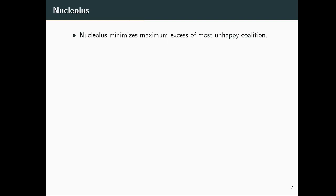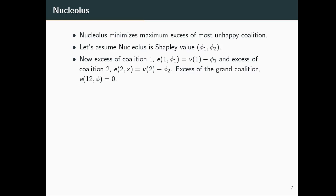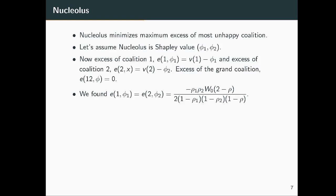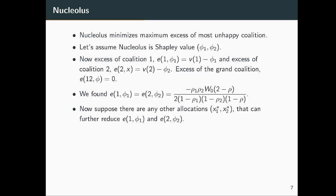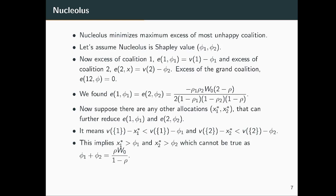The nucleolus is another solution concept in cooperative game theory that minimizes the maximum excess of the most unhappy coalition. We claim the nucleolus equals the Shapley value. The excess for coalition 1 is v(1) - phi_1 and for coalition 2 is v(2) - phi_2; for the grand coalition it is 0 since phi_1 + phi_2 equals v(1,2). Since the game is convex, all excesses are negative. Any alternative allocation x1* and x2* that further reduces excesses would require x1* > phi_1 and x2* > phi_2, which contradicts the conservation law. Therefore, the nucleolus equals the Shapley value.